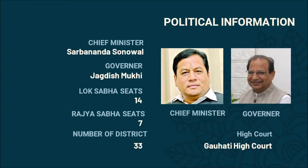The state has 14 Lok Sabha seats and 7 Rajya Sabha seats. The total number of districts in the state are 33. Though Dispur is the capital of the state, the High Court is situated in Guwahati.